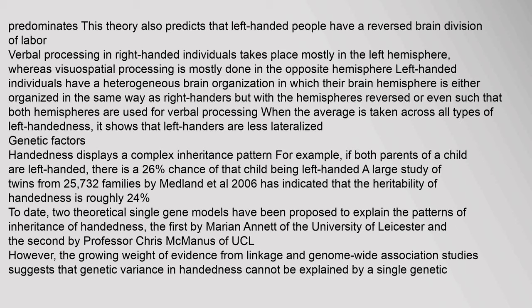Genetic factors: Handedness displays a complex inheritance pattern. For example, if both parents of a child are left-handed, there is a 26% chance of that child being left-handed. A large study of twins from 25,732 families by Medland et al. (2006) indicated that the heritability of handedness is roughly 24%.